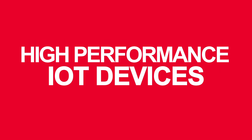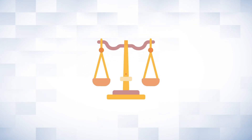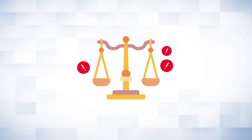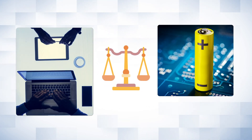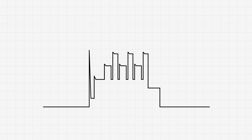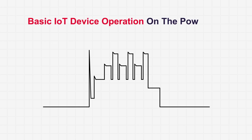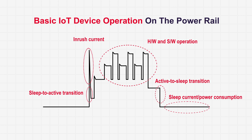Challenge 1: High-performance IoT devices under development must provide large-capacity, high-speed communication with long battery life and low power consumption. To improve performance through increased battery life, analysis of current waveforms, including precise current measurements, are required.